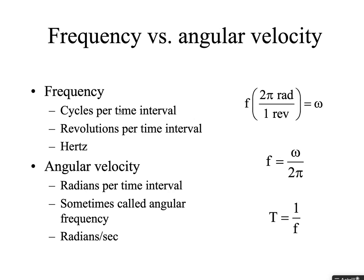Frequency and angular velocity are related: the frequency of a rotation equals omega over 2π, or 2π times frequency equals omega. Frequency is the number of rotations per second. If a wheel goes through one complete rotation per second, that's frequency equals one, and omega equals 2π radians per second. Period — the time to go around once — is the reciprocal of frequency, so 2π over the period equals omega.